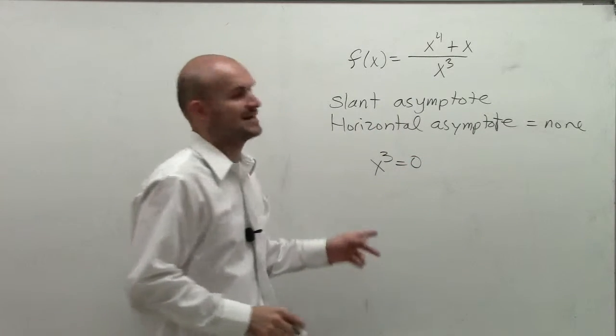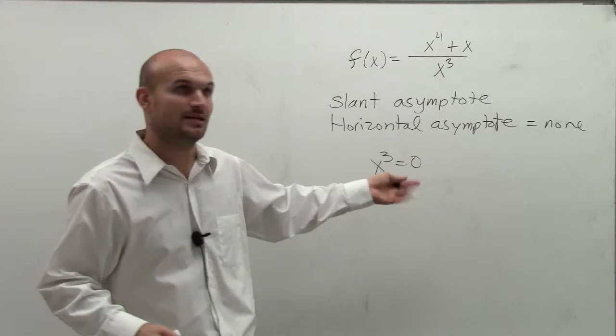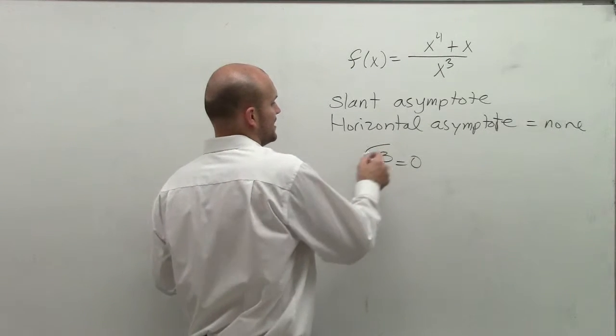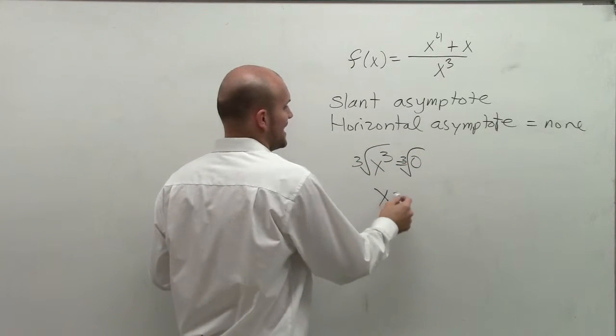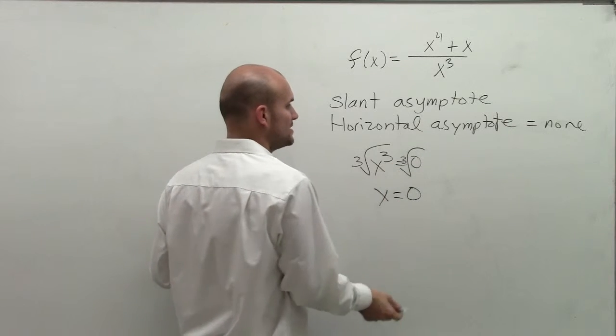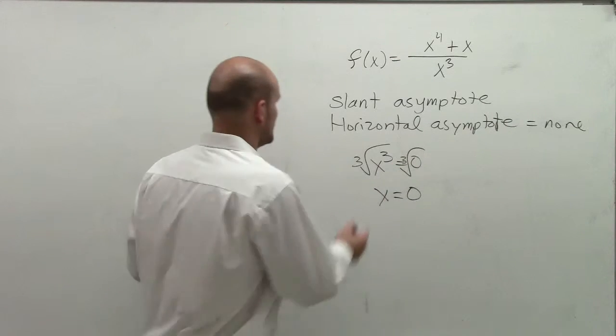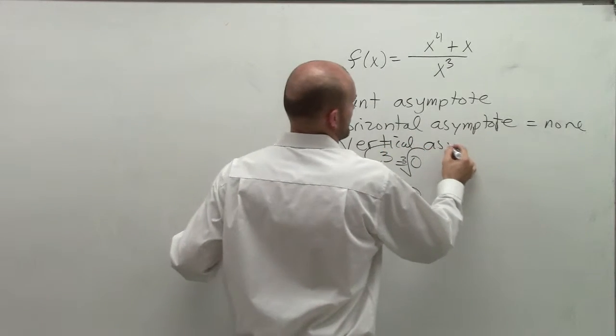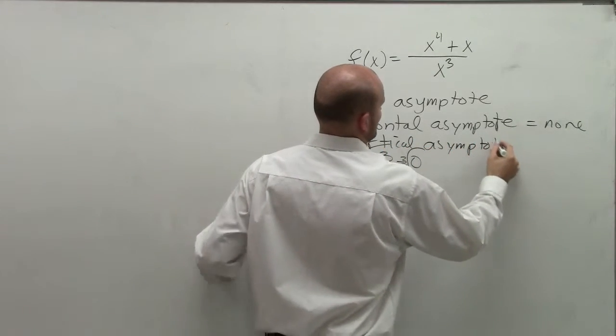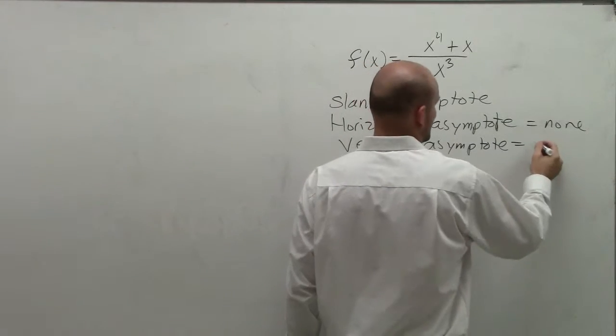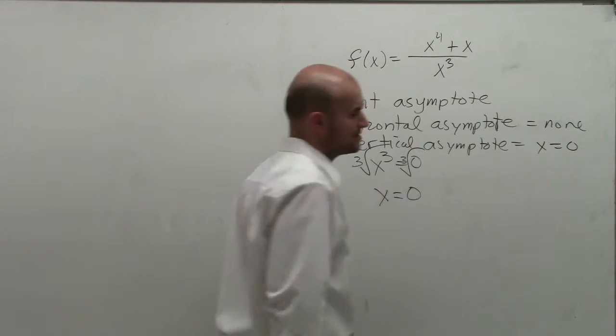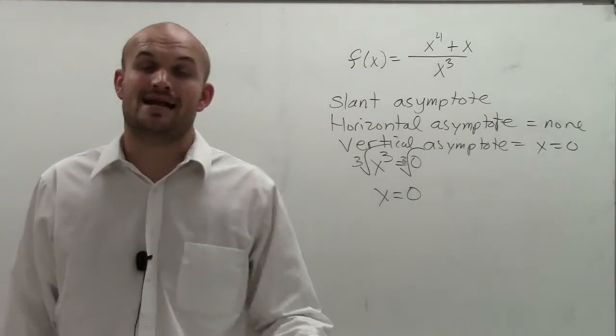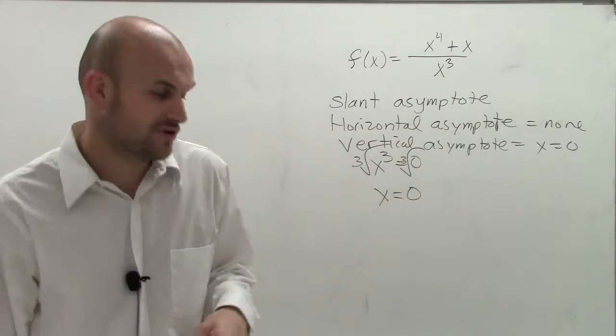So what values of x are going to be equal to zero? Well, to figure that out, I take the cube root of both sides and I get x equals the cube root of zero, which is zero. So therefore, my vertical asymptote is going to be equal to x equals zero. So that means it's going to be the line when x equals zero is going to be my vertical asymptote.